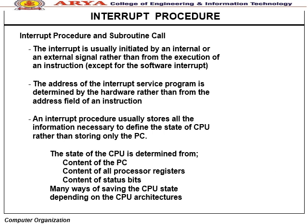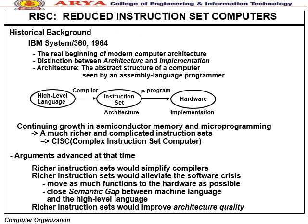Interrupt procedure vs. subroutine call: An interrupt is initiated by an internal or external signal, not by an instruction. The interrupt service program address is determined by hardware, not the address field of an instruction. An interrupt procedure stores all information defining the CPU state (PC, all processor registers, status bits), not just the PC. The CPU state depends on content of PC, all processor registers, and status bits. There are many ways of saving CPU state depending on CPU architecture.